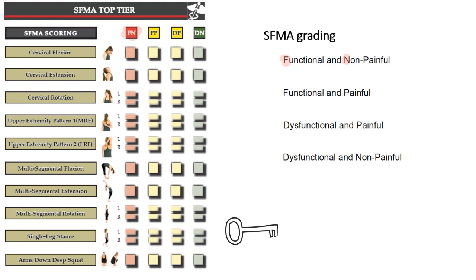The next category is Functional Painful, or FP: the patient has full range of motion but the movement is painful. Then there is Dysfunctional Painful, or DP: they have pain and also lack full range of motion or perform the movement with altered mechanics. Finally, Dysfunctional Non-Painful, or DN, means they are dysfunctional — lacking full range of motion or normal mechanics — but are non-painful. The DN category is shown in green, indicating it needs further exploration.